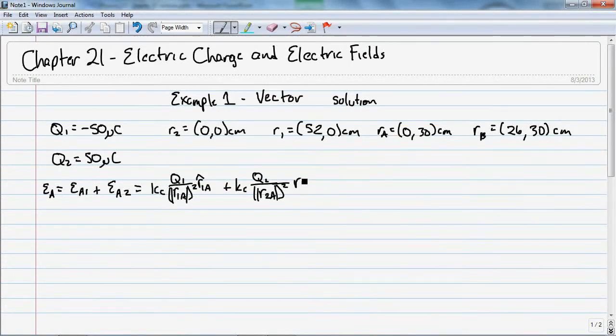So I'm going to have R2A squared times my unit vector R-hat 2A. I can bring the K's outside. So I'm going to have 9 times 10 to the 9th newton meter squared per Coulomb squared. Q1 is minus 50 times 10 to the negative 6th Coulombs. And my distance is going to be...